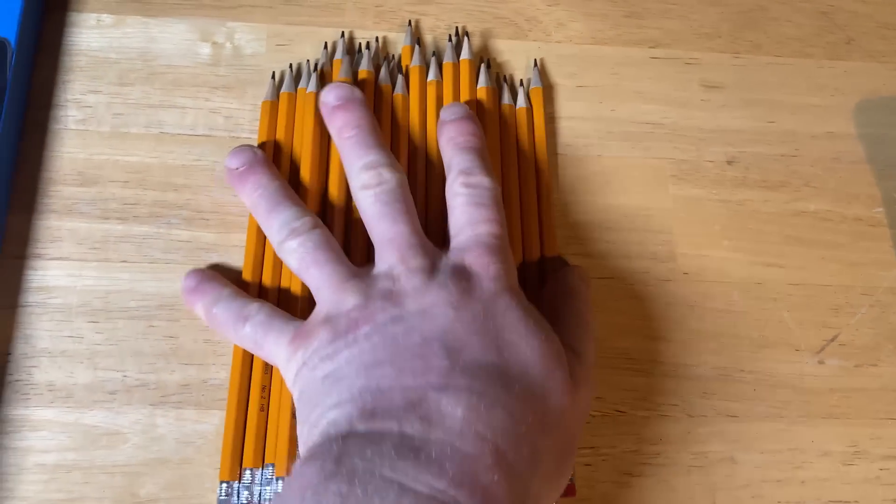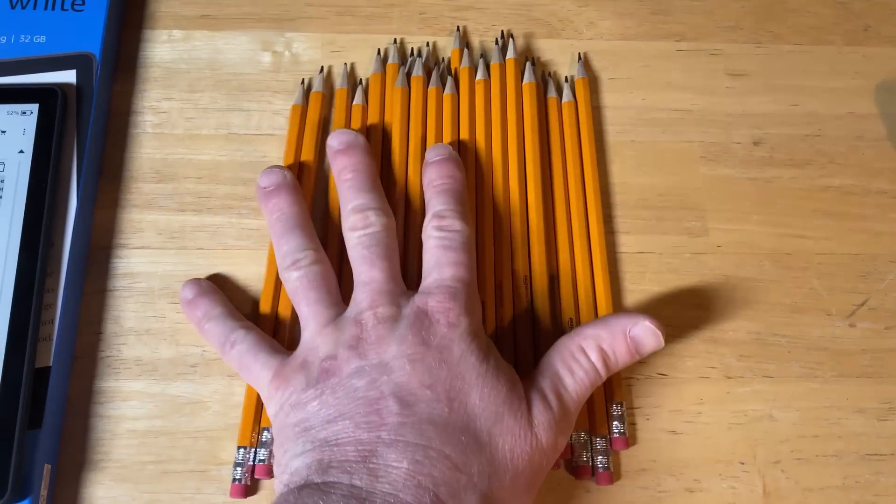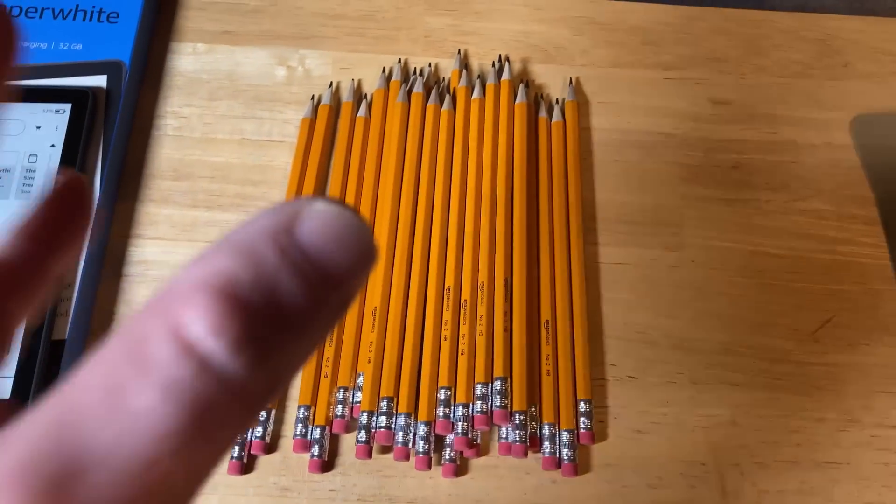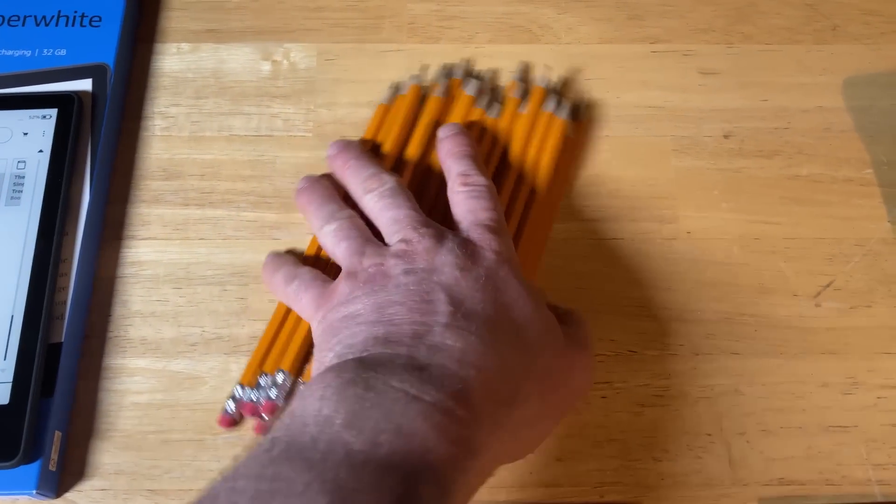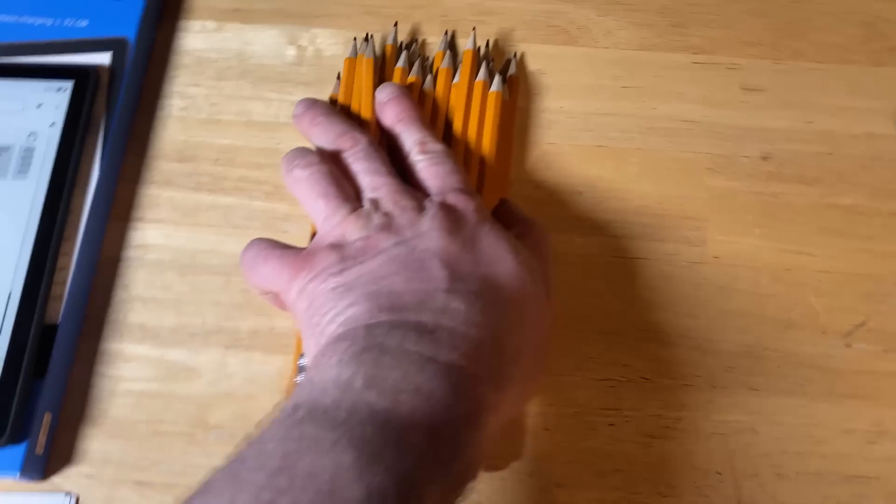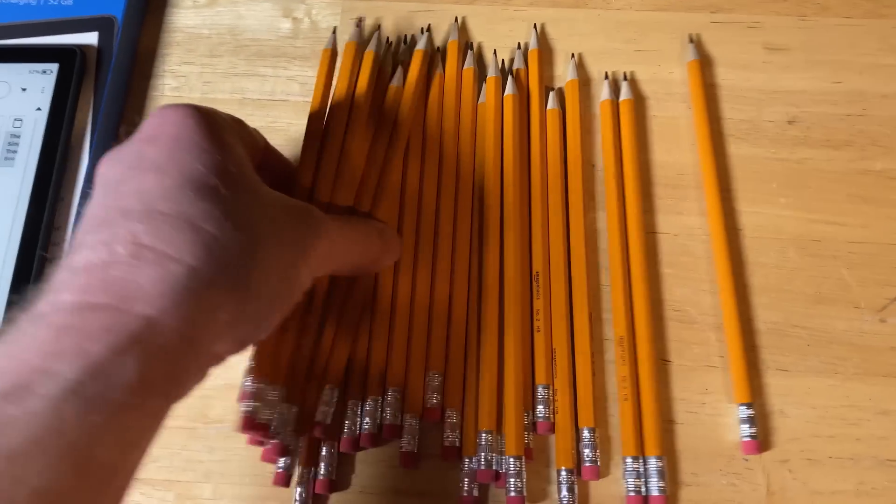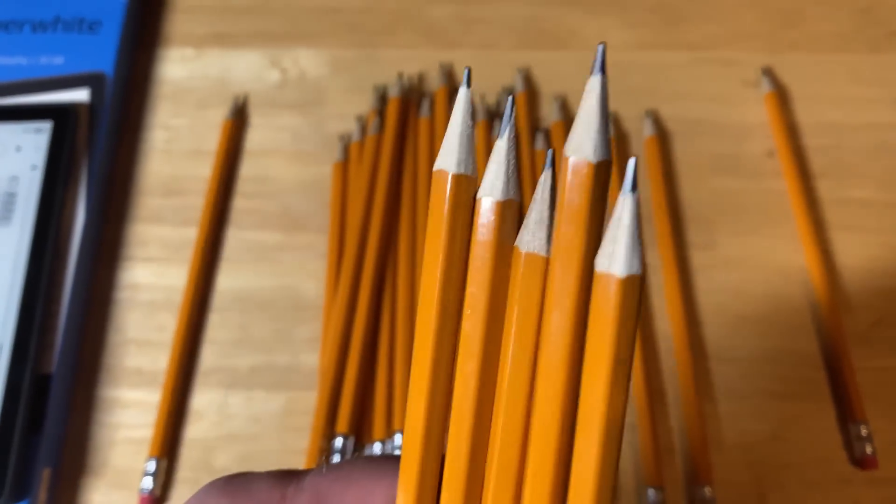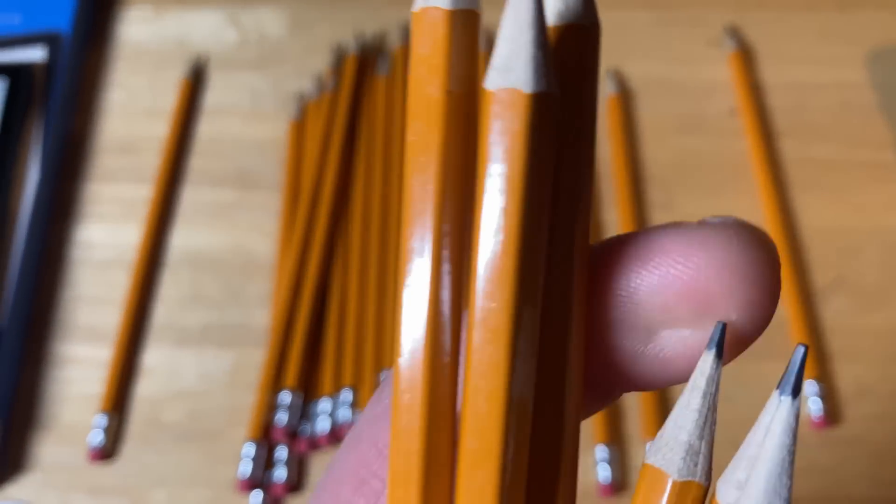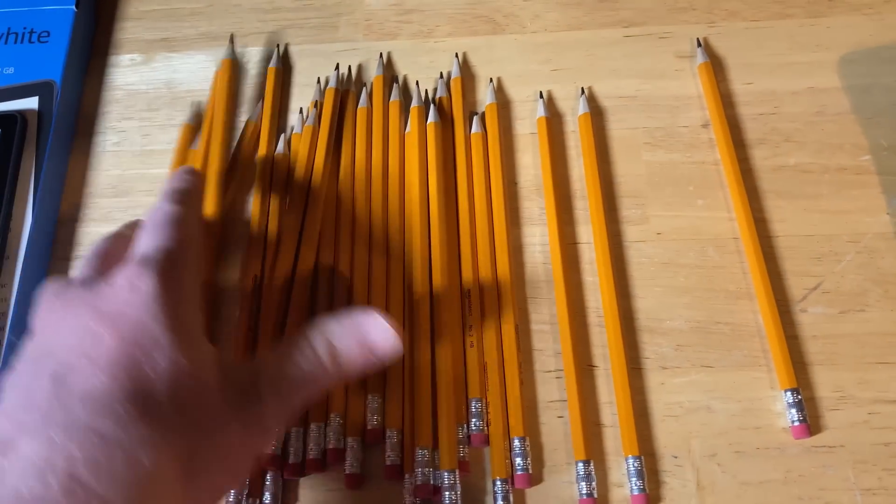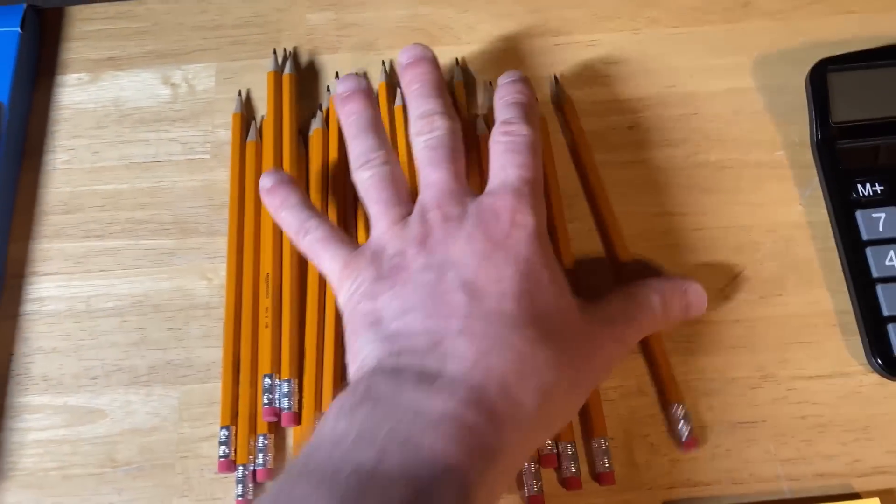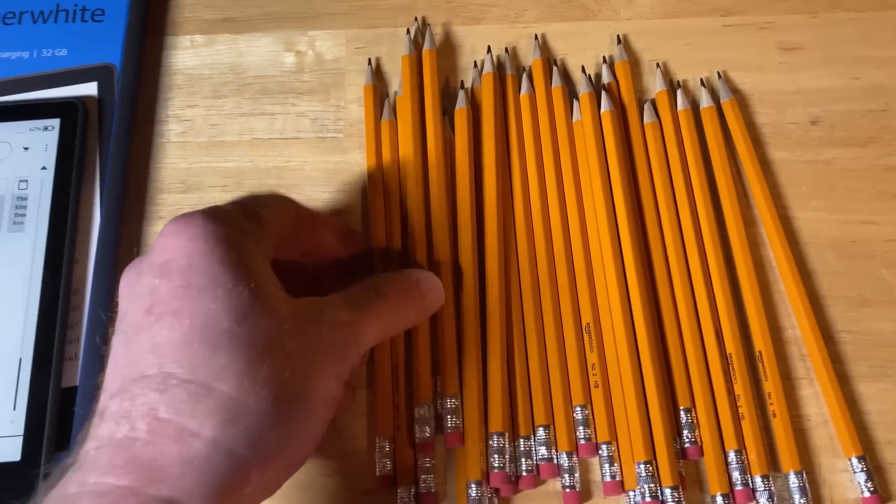Pencils. These are the Amazon Basics pencils. These are pretty good pencils. I'm also a big fan of Ticonderoga pencils, but I wanted to show you these because these are a little bit more affordable and you get more for your money. And I like how they come sharpened like this. Like they're sharpened nicely. They don't have that weird tip. I feel like they're ready to go right out of the box. They erase fairly well and they write fairly well. So good overall pencils.